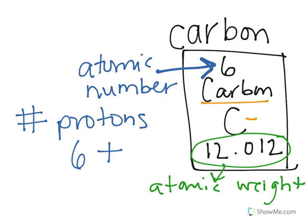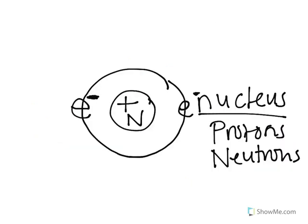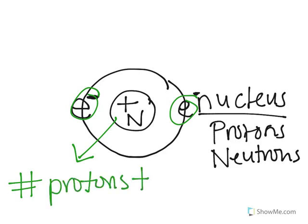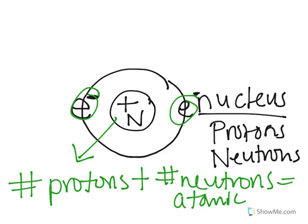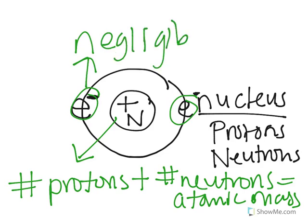Where does the weight come from? It turns out that the electrons we show here are extremely, extremely small compared to the mass of the protons and neutrons. So the mass of an atom comes from the protons plus the neutrons — that equals atomic mass. Because the electrons are so small, they are essentially negligible and we don't even count them in the mass of that atom.